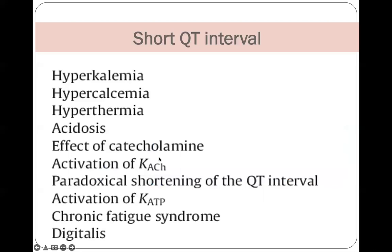The second pathology is the short QT interval, which is below 350 milliseconds. It occurs in the opposite situations. In addition to congenital short QT syndromes (types one to six), caused by pathologies in potassium channels, it may occur in hyperkalemia, hypercalcemia, hypermagnesemia, hyperthermia, acidosis, effects of catecholamine use, and digitalis toxicity. It is also commonly evident in patients with chronic fatigue syndrome.